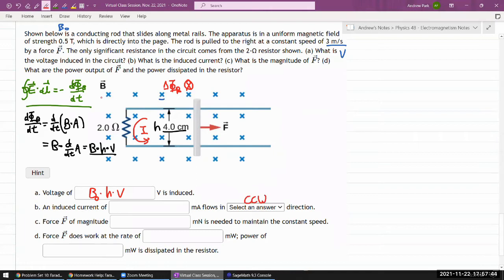So current flows in counterclockwise direction. And I need to figure out the magnitude. Well, that part is easy. I already have the voltage, and this is the only significant resistance according to the question. So the current should be the voltage divided by the resistance. This is interesting.